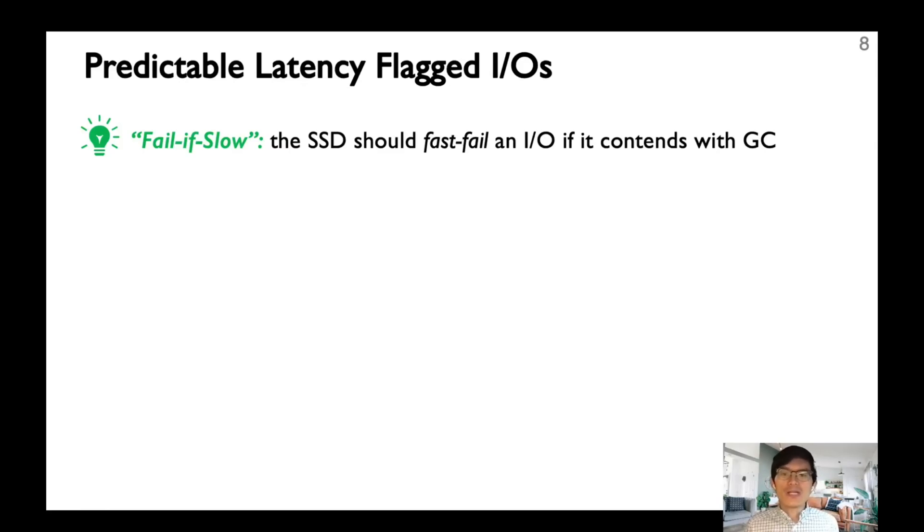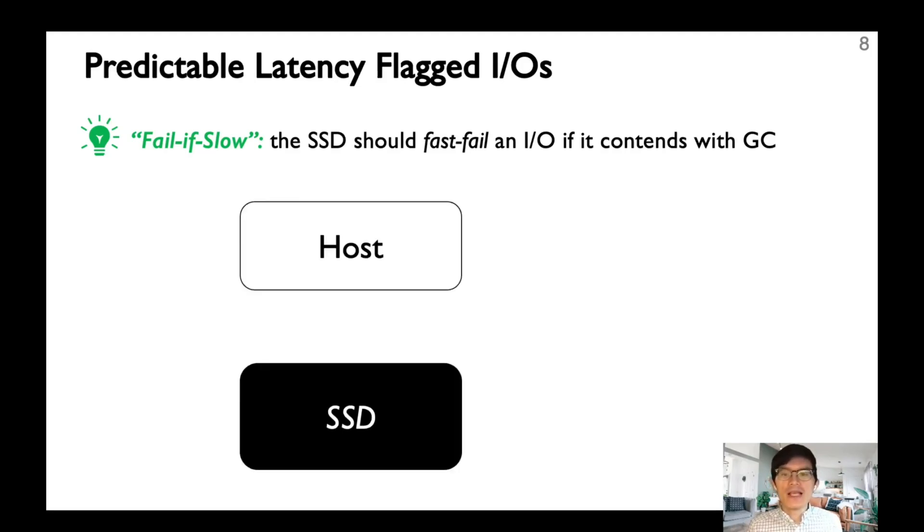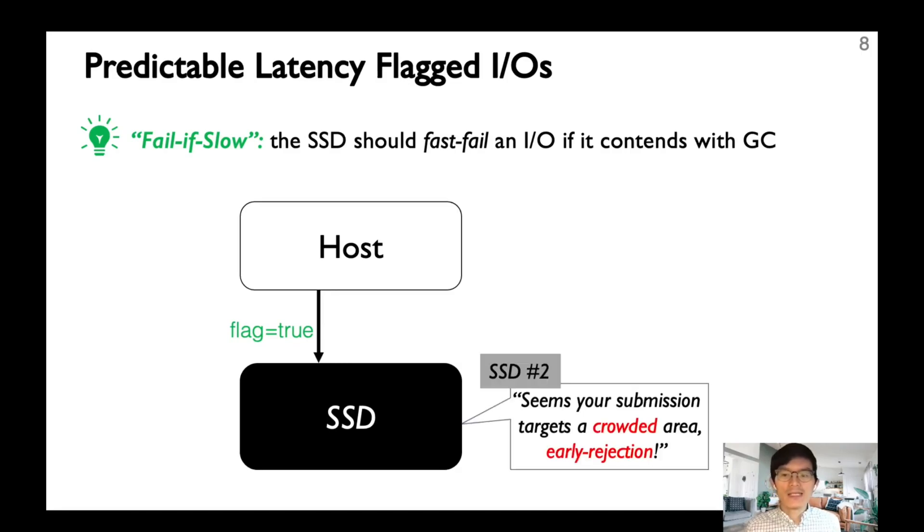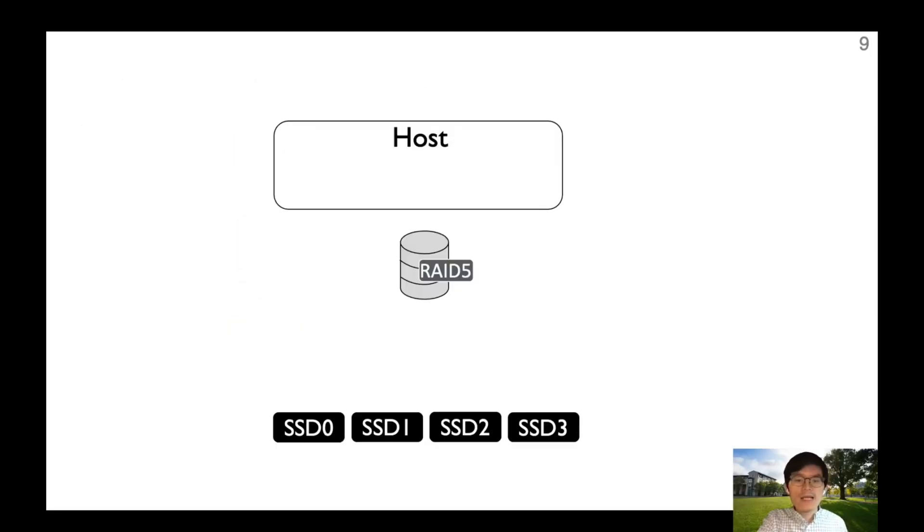First, IODA advocates a new fail-if-slow SSD interface. The SSD will tell the host whether it's busy with GC and fast-fail IOs under contention on purpose. Here is an illustration. The host submits requests tagged with a special latency-sensitive flag. After receiving the submission, the SSD will check whether the user requests will be affected by GC or not. If so, fast-fail this request to the host as soon as possible, without actually executing it. Upon receiving the fast-failed IOs, the host side can perform proactive data reconstruction to improve latencies.